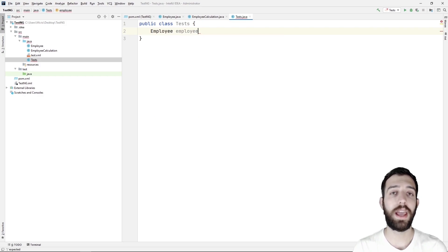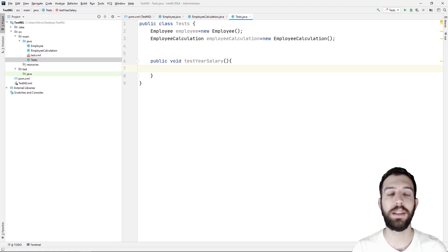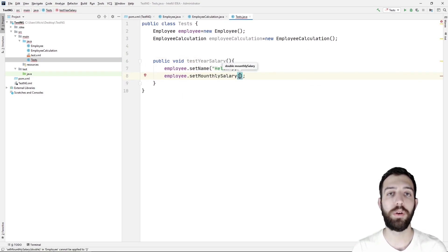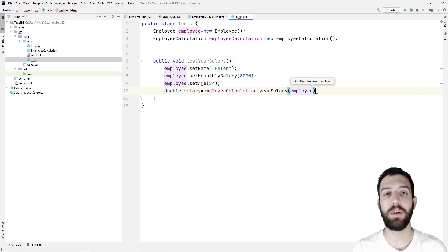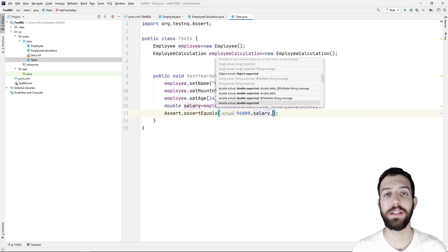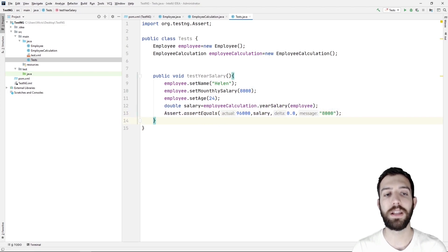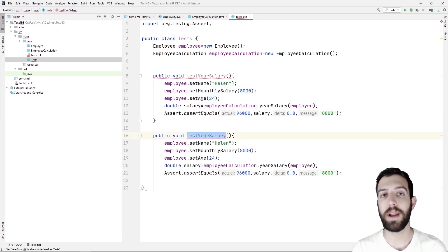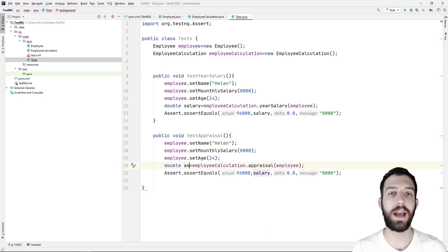After that, we create a new class with a name Test. We write two objects, one for the employee and one for the employee calculation. And we start to write the two test methods. The first method is the test yearly salary, which we determine the name, the monthly salary, and the age of the employee. We call the yearly salary method to calculate the yearly salary of the employee. And we call the asset equals method to determine the pass or fail status of the test case. Furthermore, we write a new method with a name test appraisal. We set again all the attributes of the employee. And we call the appraisal to calculate the rise of the salary of the employee. And last, we call the asset equals method.